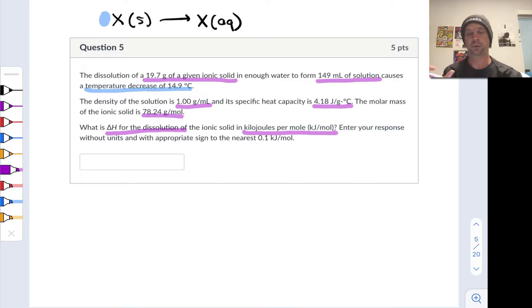The first thing I would do is write a heat balance, an equation that shows all of the relevant heat flows here and how they relate to each other. We have a reaction taking place—we can think of the dissolution as a reaction. All of the heat of that reaction is transferred to or from the surrounding solution, so the heat balance is Q reaction equals negative Q of the solution.